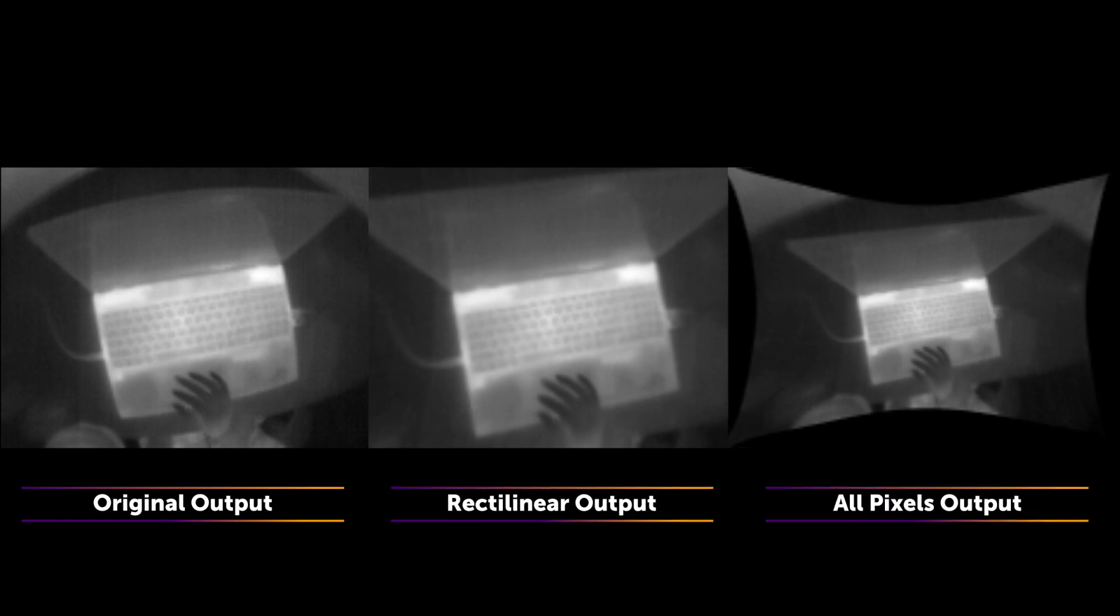Applying the new all-pixels version camera matrix provides the option to retain all pixels from the input, but it introduces black pixels around the borders.